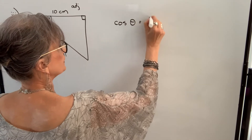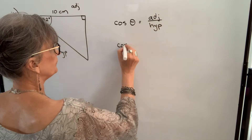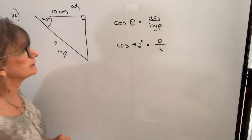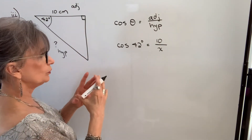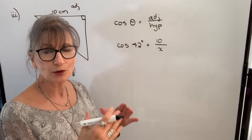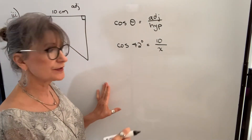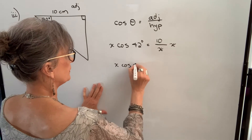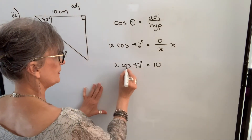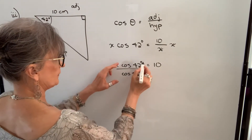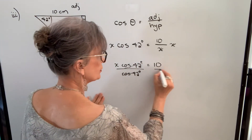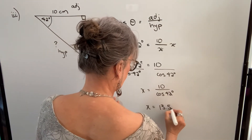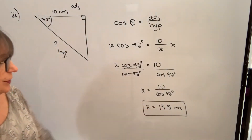Cosine of theta will be equal to the adjacent side divided by the hypotenuse. Plugging in what we know: 42 degrees; the adjacent side is 10; and the hypotenuse we're not sure of, so we'll call that X. I can't solve for X when it's in the denominator, so I multiply both sides by X — it cancels on this side, giving me X times the cosine of 42 degrees equals 10. I then divide both sides by the cosine of 42 degrees, so X will equal 10 divided by the cosine of 42 degrees. When you do the calculation, you should get 13.5 centimeters.